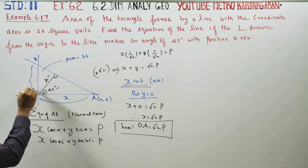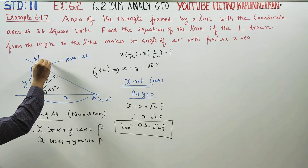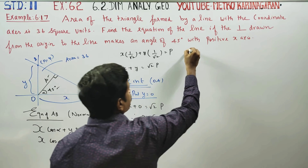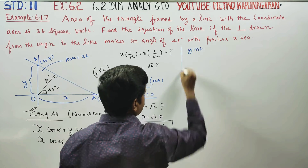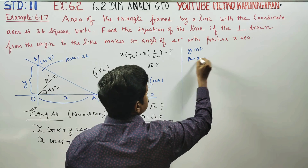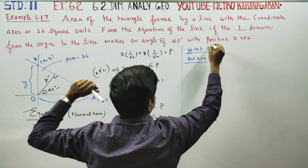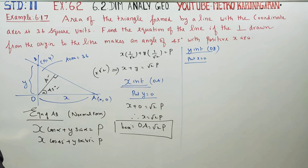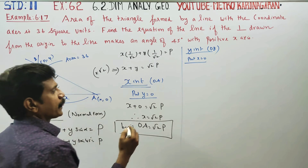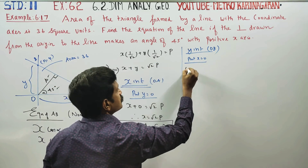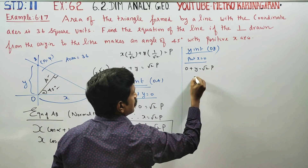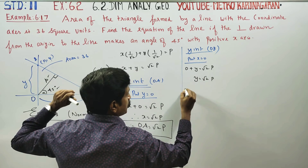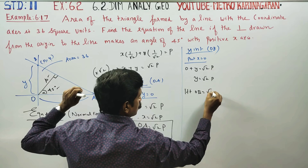The y-intercept OB is found by putting x = 0. Substituting x = 0: y = √2P. So OB = √2P. This is the height of the triangle.